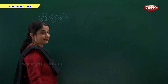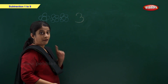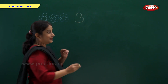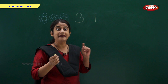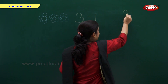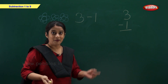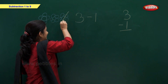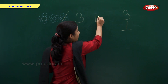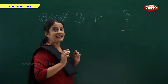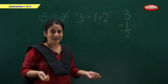I have 3 flowers: 1, 2, 3. I want to remove 1 flower. So minus 1. And you know friends, there is one more way of writing 3 minus 1. Now let's remove 1 flower. So how many flowers left? 1 and 2. So 3 minus 1 is equal to 2.